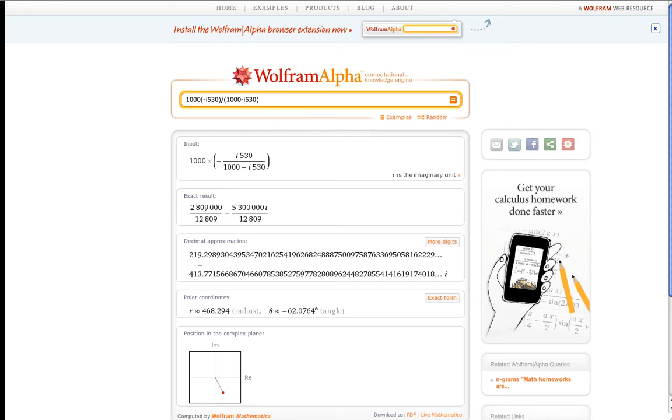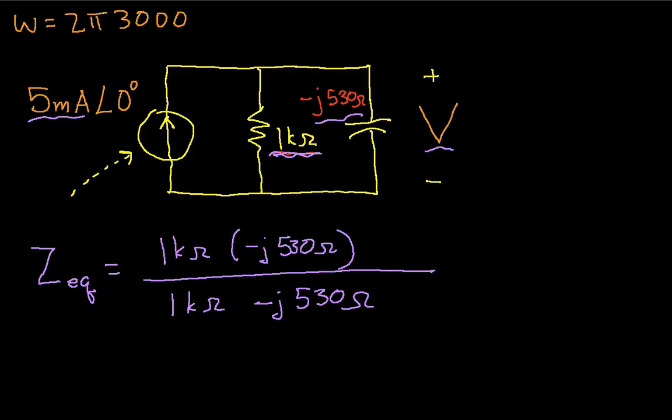So if we go back now to our circuit, we can say that this is equal to 468.3 ohms at an angle of minus 62.08 degrees.